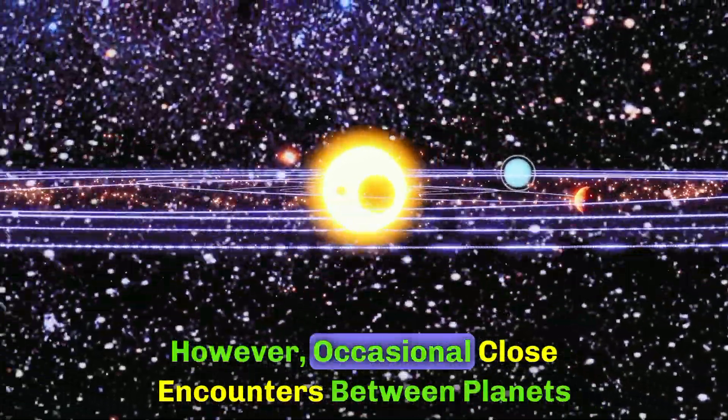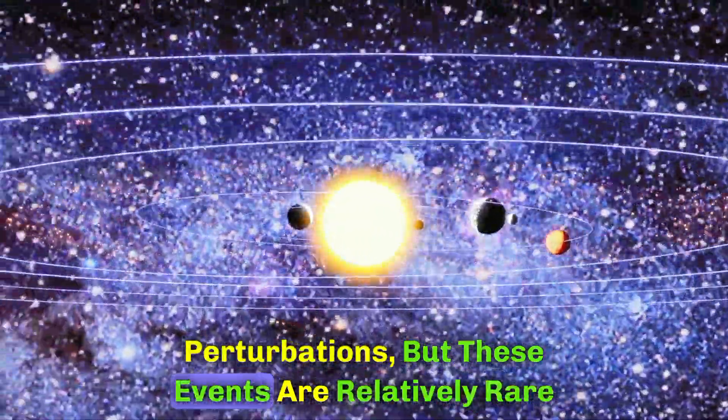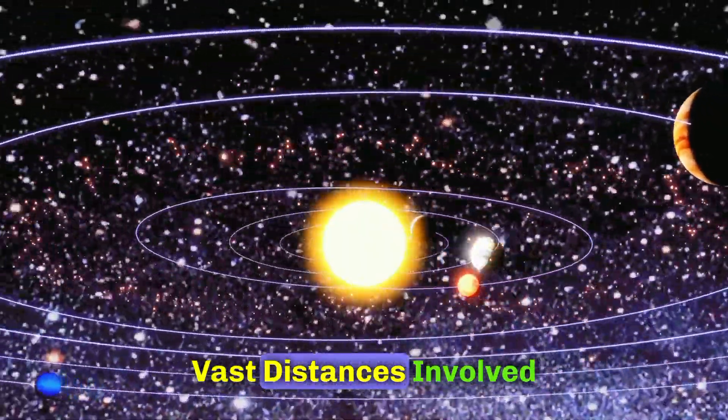However, occasional close encounters between planets can happen due to gravitational perturbations, but these events are relatively rare and usually do not result in collisions due to the vast distances involved.